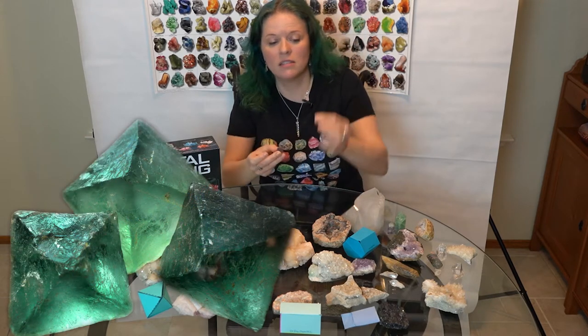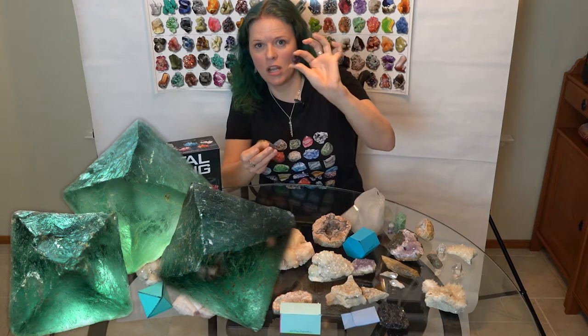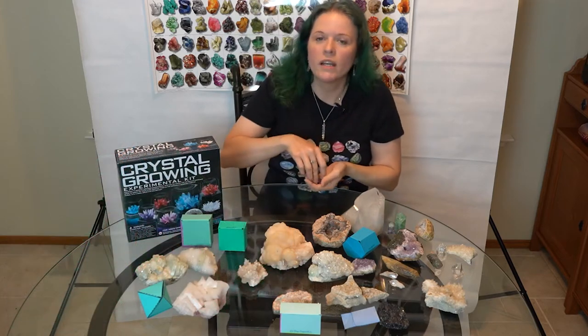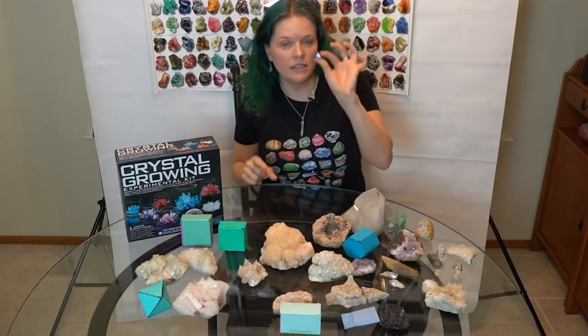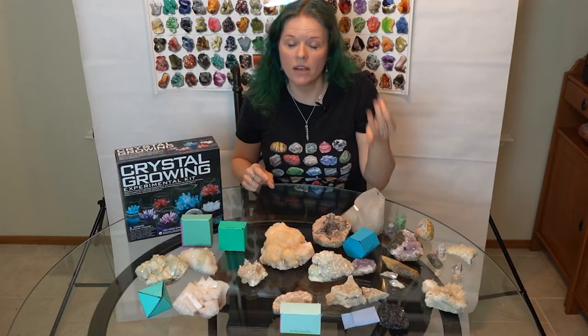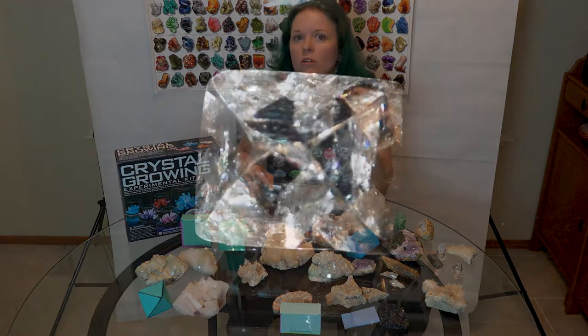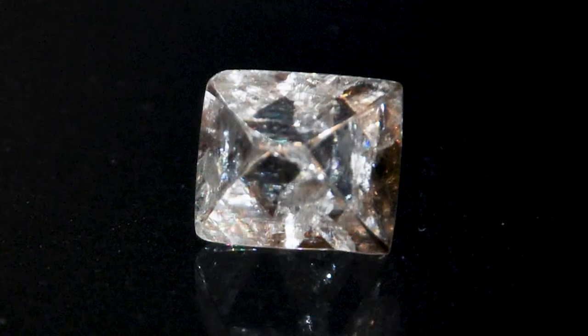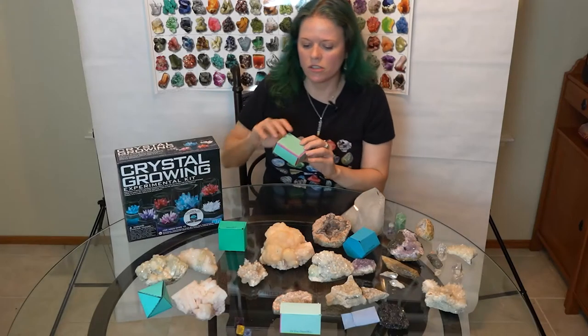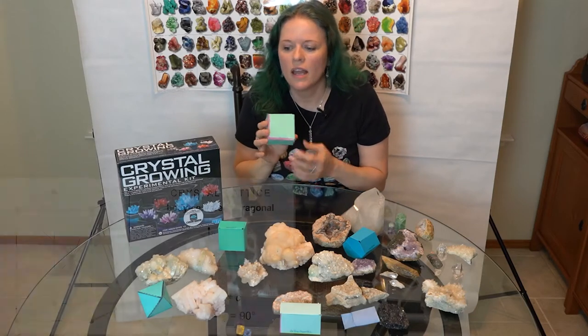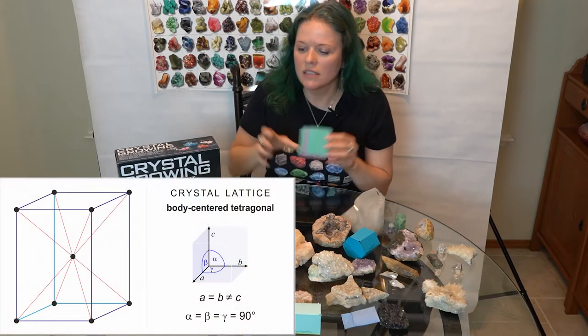A cubic structure can look either like this diamond shape or it can look like a perfect cube, and that's actually why we call it a diamond shape — because another mineral that forms in the cubic structure is diamond.